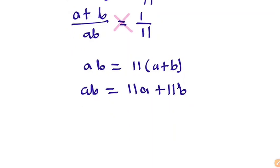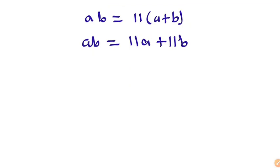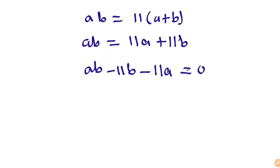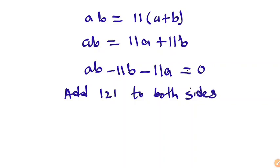Understood? So from there, the next thing we are going to do is put all the terms on one side and equate to 0. So we are going to have a·b minus 11b minus 11a equals 0. Then we add 121 to both sides, so we get a·b minus 11b minus 11a plus 121.